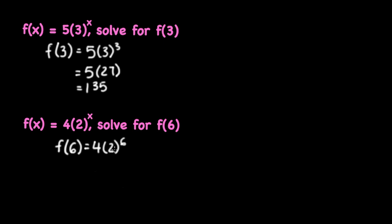And again, order of operations says that we have to do 2 to the sixth first, which is 64. And then 4 times 64 is 256.